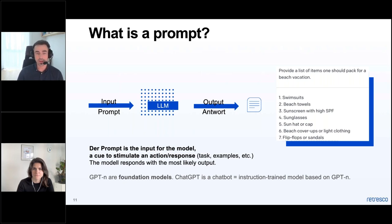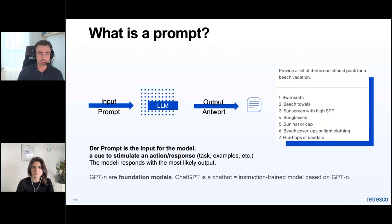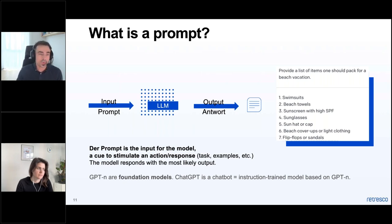A prompt is simply the input you give to the model as a user — for example, an instruction, examples of what you'd like it to do, or text the model should continue writing. In the case of ChatGPT, it is the complete conversation history up to that point — everything that goes in when you click submit. The model then generates a continuation of the given prompt word by word. The process of trying out which prompt works well to make the model reliably produce desired output is called prompt engineering.